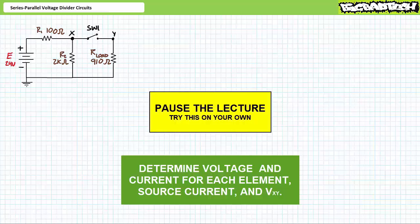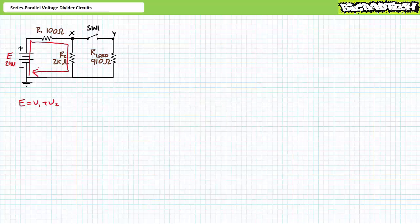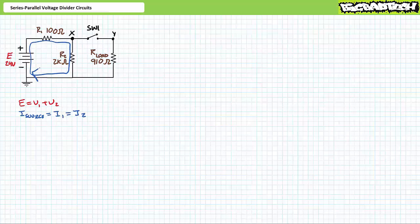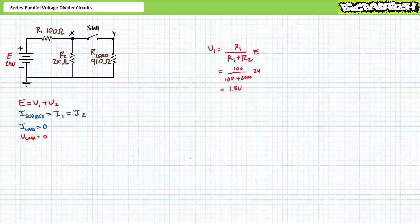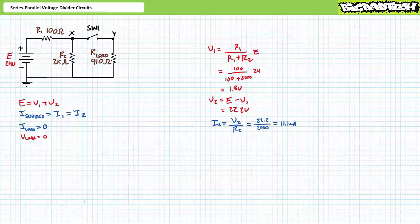If you're tracking, you should have obtained the following values. While in the open state, a KVL analysis suggests E equals V1 plus V2, and a KCL analysis suggests source current equals I1 which equals I2. These analyses imply R1 and R2 are perfectly in series; as a result, no current will flow through the load resistor and no voltage will be dropped across it. The voltage divider rule demonstrates V1 is 1.8 volts, V2 is the remaining 22.2 volts, and Ohm's law demonstrates I2 is 11.1 milliamps. Source current equals I1 equals I2 equals 11.1 milliamps.